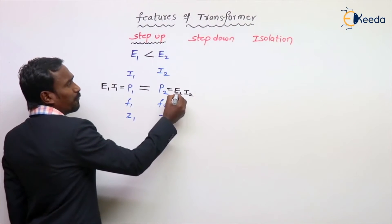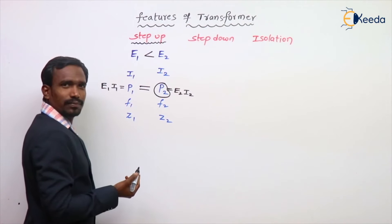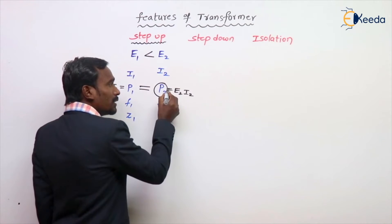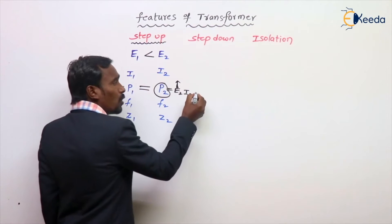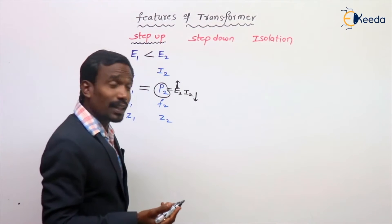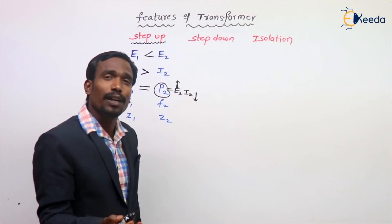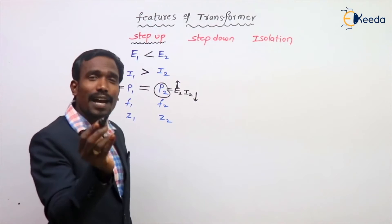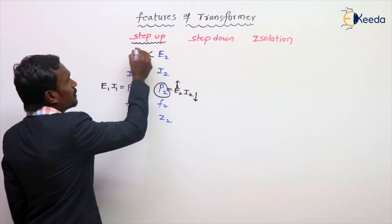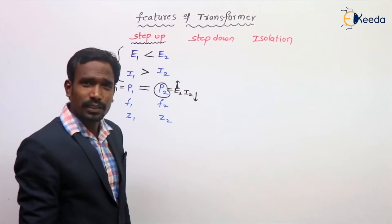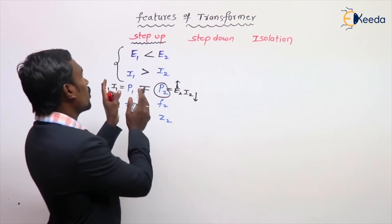If E2 increases, to keep the power constant, the current I2 should decrease. So when E2 is greater than E1, then automatically I2 is less than I1, because the transformer is a constant power device. In a step-up transformer, E2 is greater than E1 and I2 is less than I1.